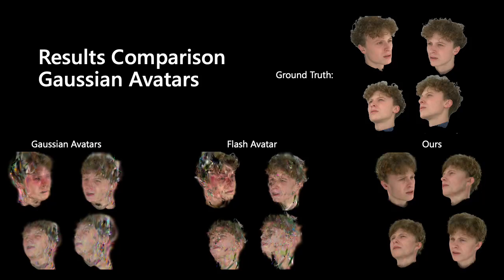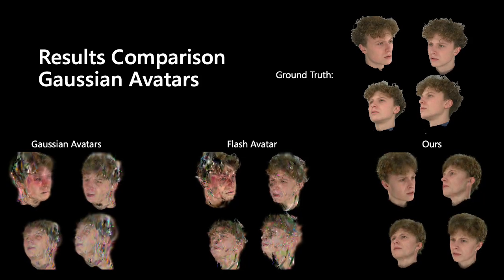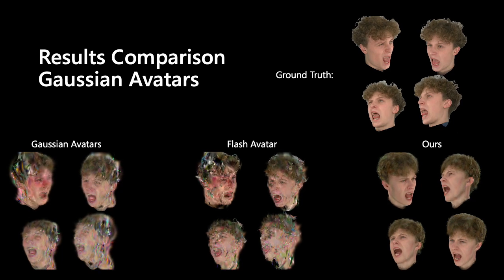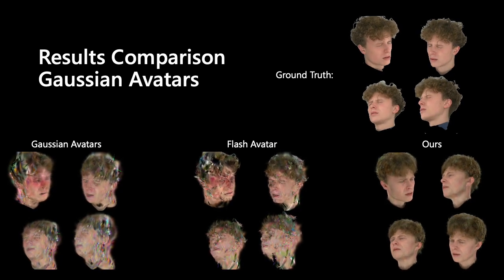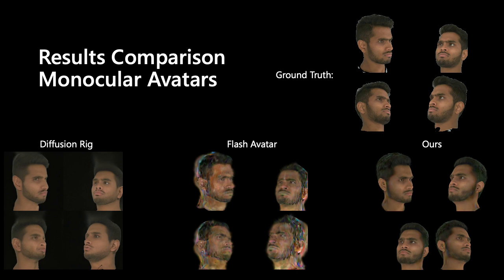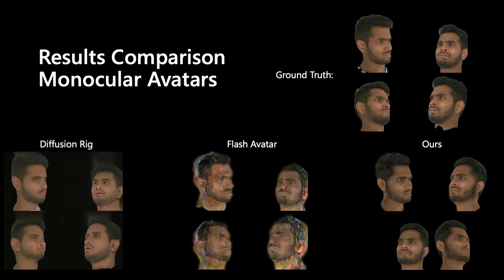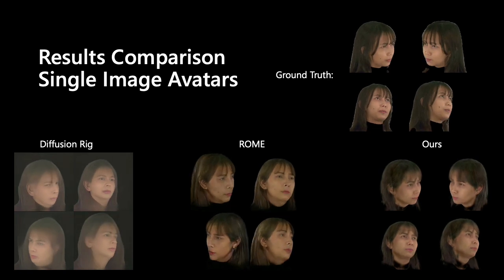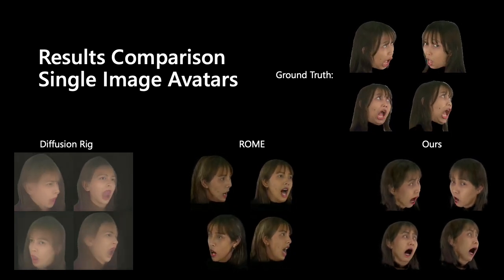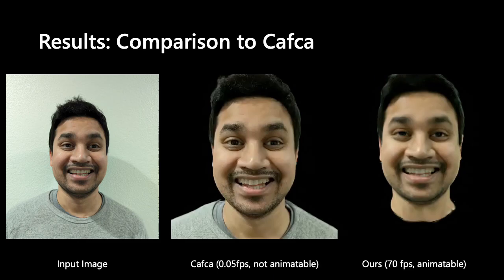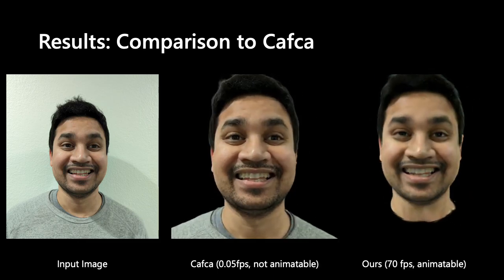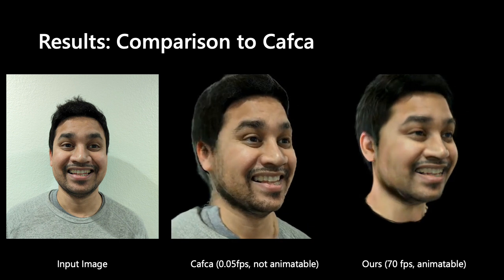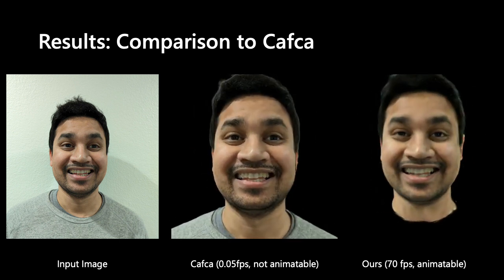We compare our model to existing state-of-the-art. Here we compare with Gaussian avatar models, where each model is trained on a single video. We also compare with models designed for monocular training, and with models designed for single-image avatars. Finally, we compare to the recent paper Kafka. Like our model, Kafka trains a prior on synthetic data. However, their model cannot be animated, producing static expressions only.